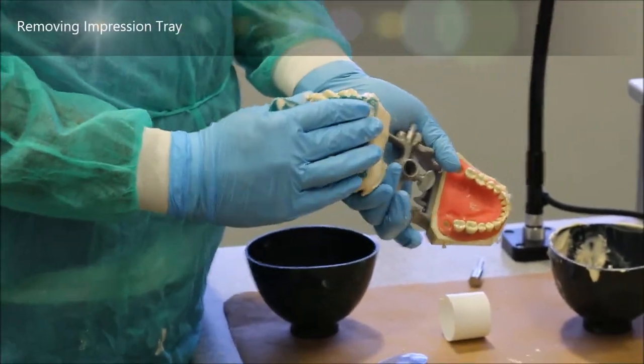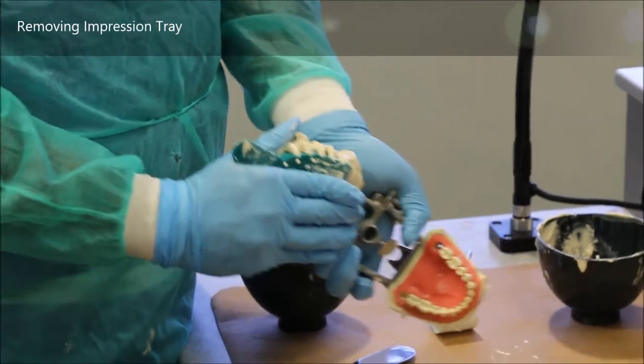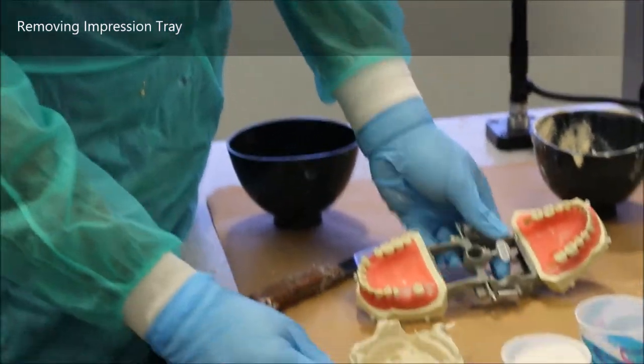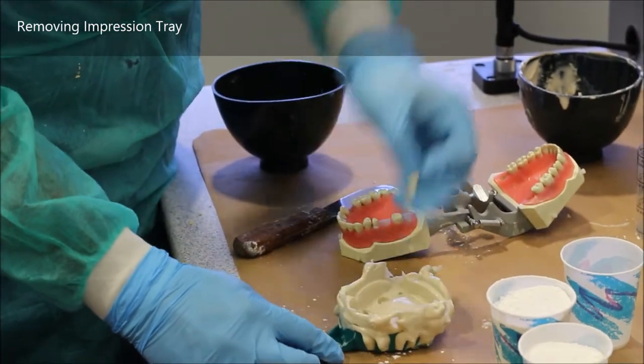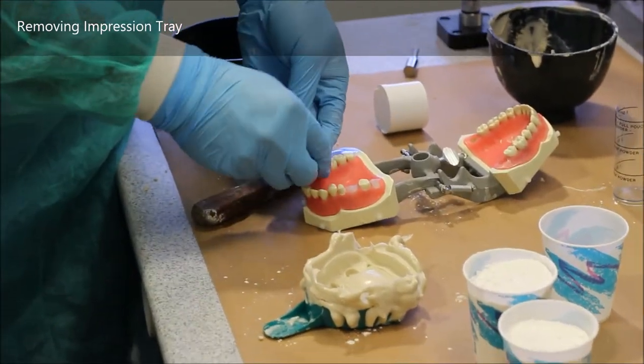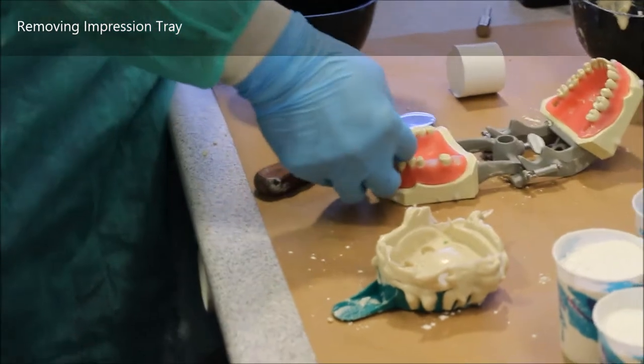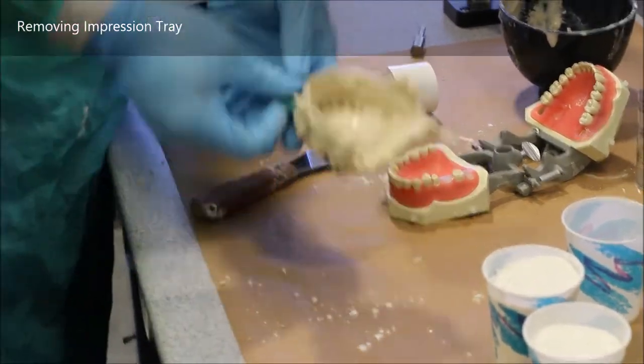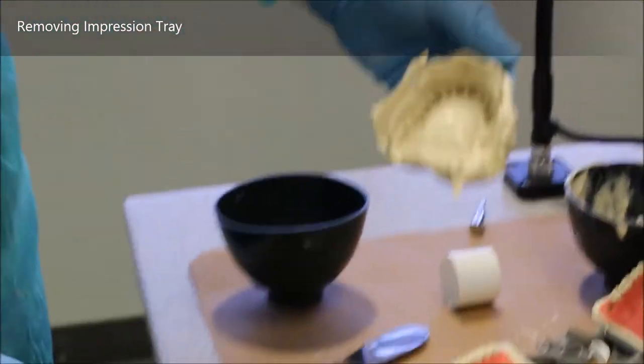When you're separating your impression from the typodont or whatever you're taking the impression of, you want to do it in one quick snap as you see right there. If this doesn't happen, you can take your fingers around the posterior teeth and try to gently lift the impression to break the vacuum suction seal that the impression material forms around the structures.